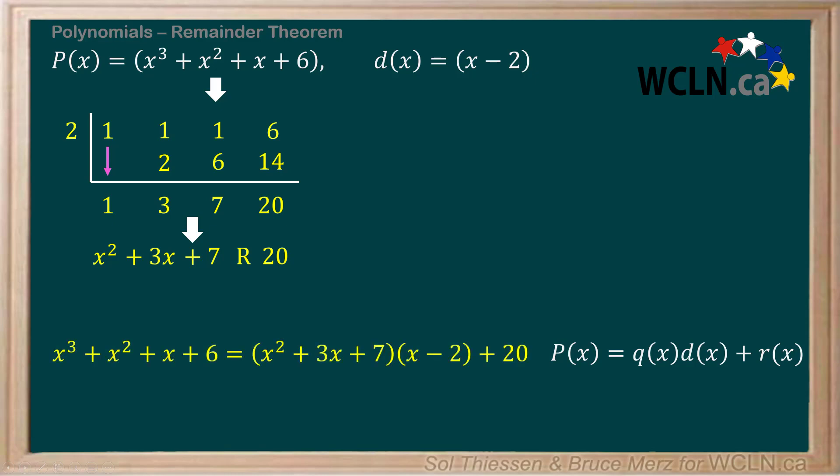Now let's employ the Remainder Theorem, which we saw on the last slide. The remainder due to the division of a polynomial P(x) by a divisor d(x) of the form x minus a is equal to P(a).